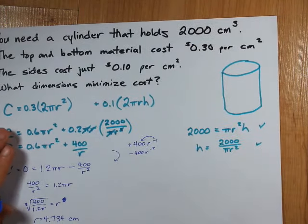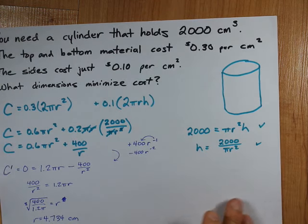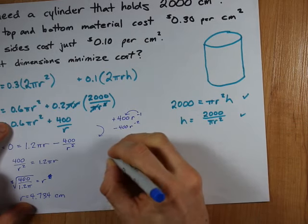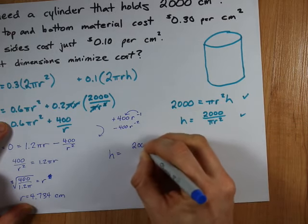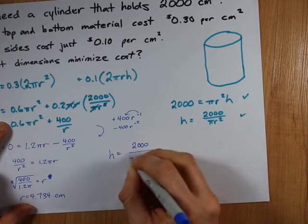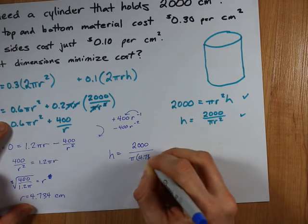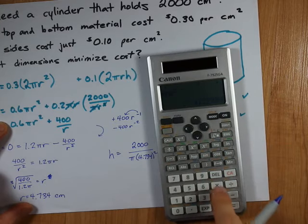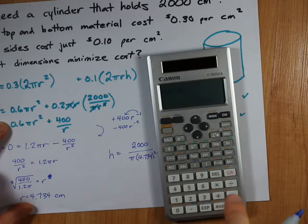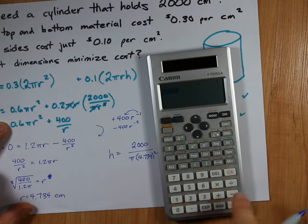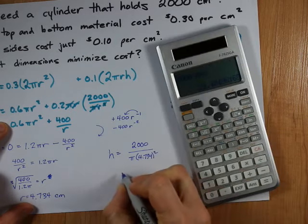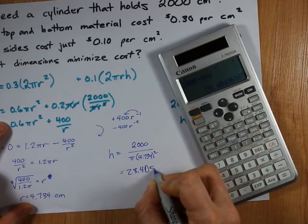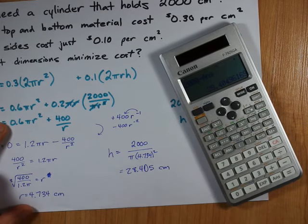Especially when we want a total volume of 2,000 centimeters cubed. And then to find the height that that corresponds to, I just plug that into the h formula we found over here. That's 2,000 over pi times that number squared. That sounds like the job for my calculator as well. I'm going to square that answer, multiply it by pi, and then do 2,000 divided by that number. I get a height of 28.41, 405 centimeters.